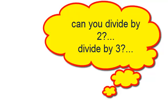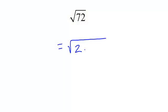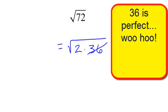When I take 72, divide it by 2, I get 36. And if I am familiar with my perfect squares, I realize 36 is perfect.